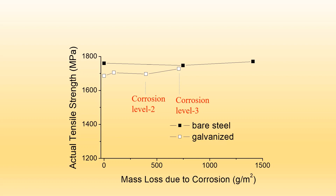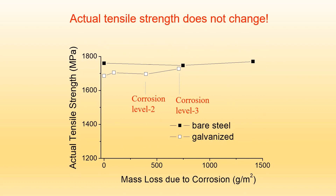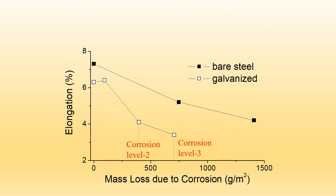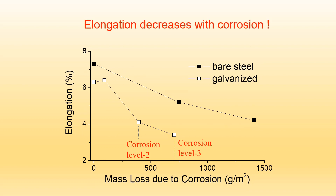The x-axis is mass loss due to corrosion, which corresponds to the corrosion level. Just look at the galvanized one — bare steel means non-galvanized wires. You can understand that the actual tensile strength does not change. This shows the elongation — clearly, elongation decreases with corrosion. A corroded wire loses ductility.